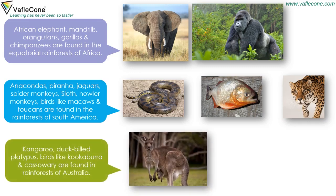Kangaroo, duck-billed platypus, and birds like kookaburra and cassowary are found in rainforests of Australia.